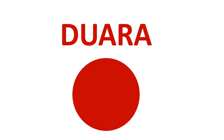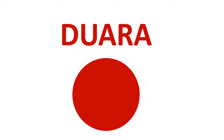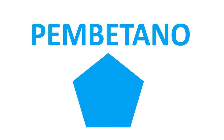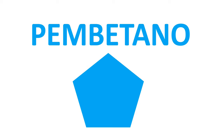Duwara, duwara — duwara is a circle. Duwara dufu, duwara dufu — duwara dufu is an oval. Pembe tano, pembe tano — pembe tano is a pentagon.